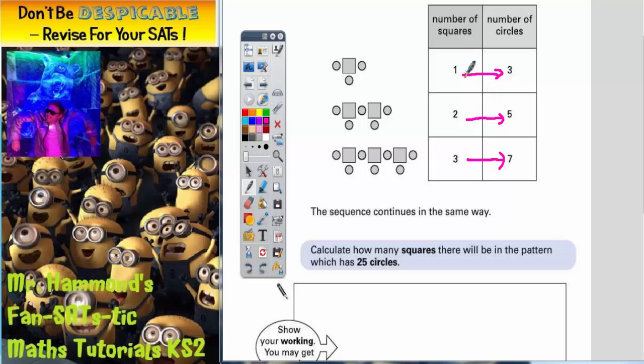So a quick look at it might show you that if you double the number of squares and add on 1, it will work. Double 1 is 2, add on 1 is 3, so that works. Double 2 is 4, add on 1 is 5, so that works. Double 3 is 6, add on 1 is 7, so that works. So we've got a rule.